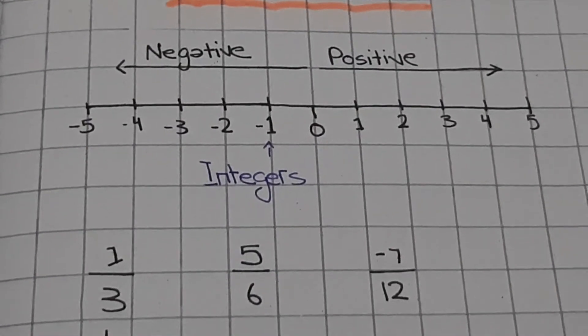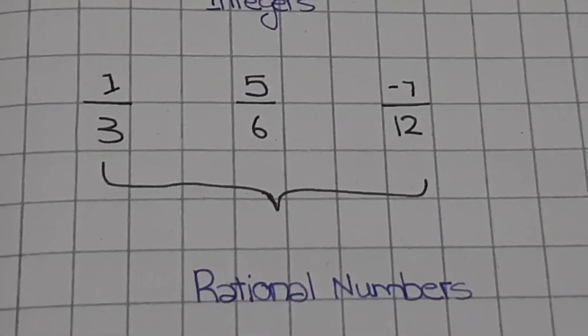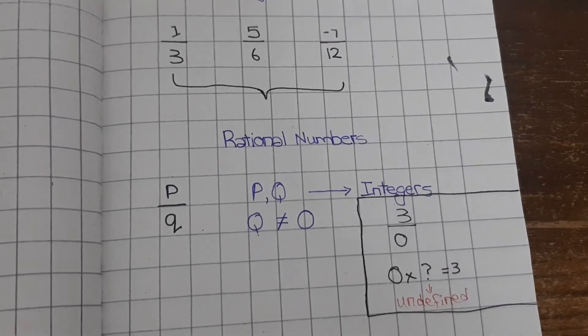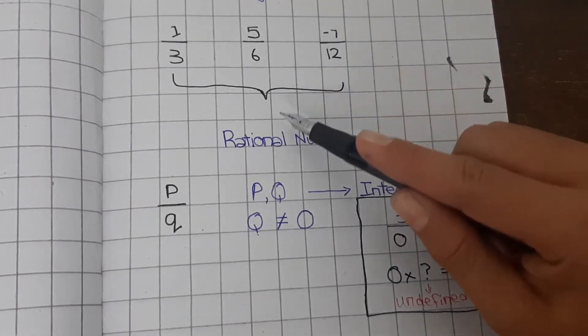But what about these numbers? They are known as rational numbers. You see, whenever we see these kinds of numbers, we don't always say rational numbers.